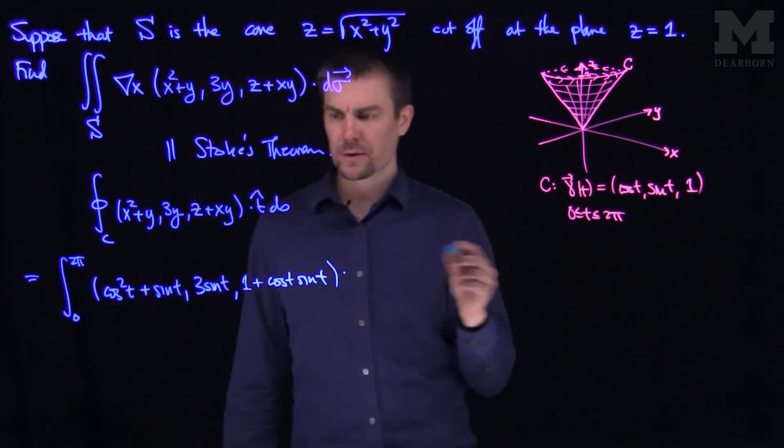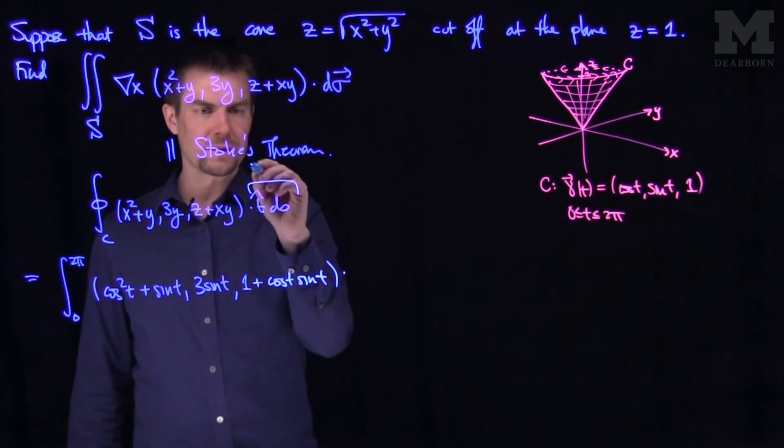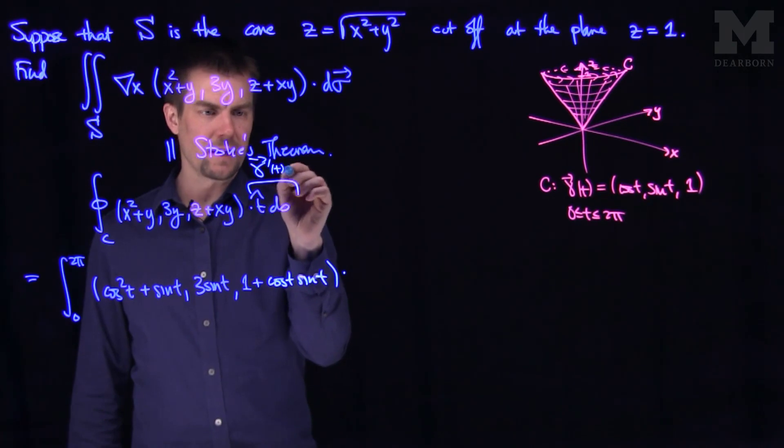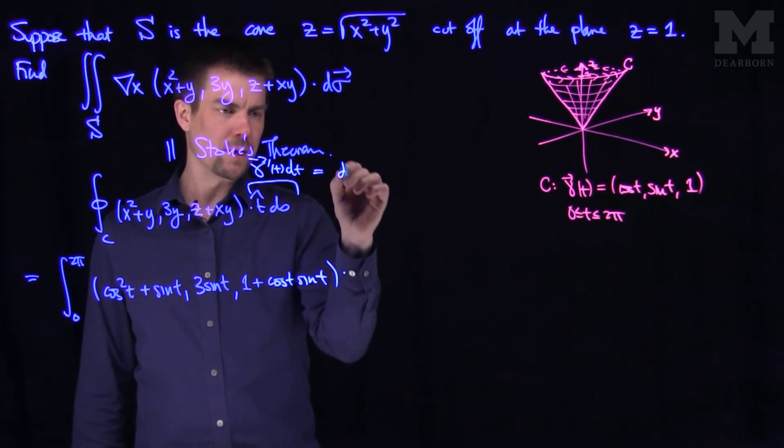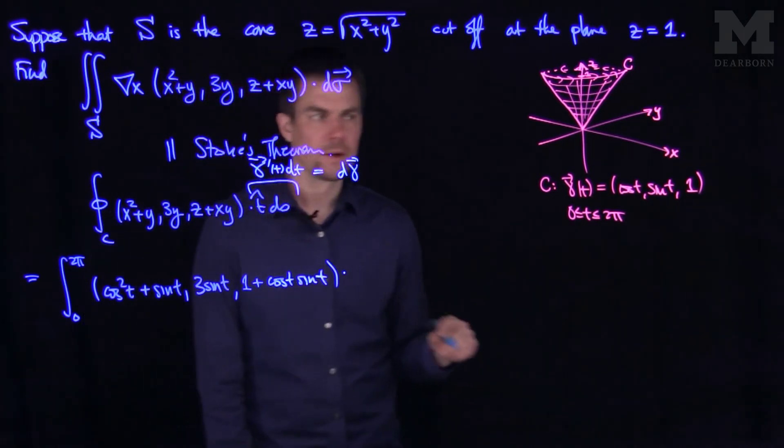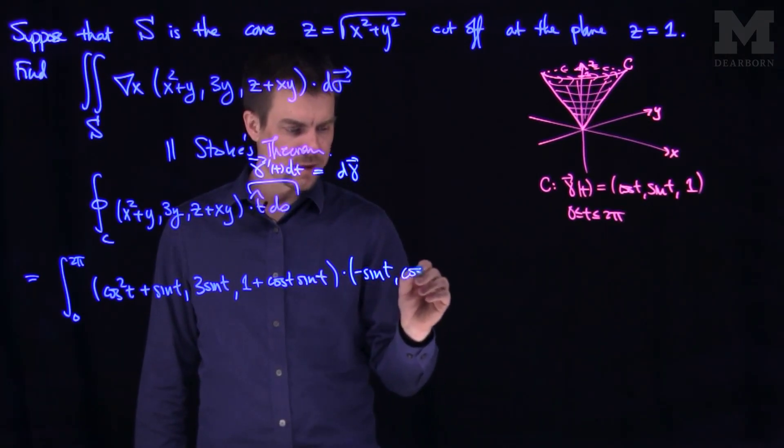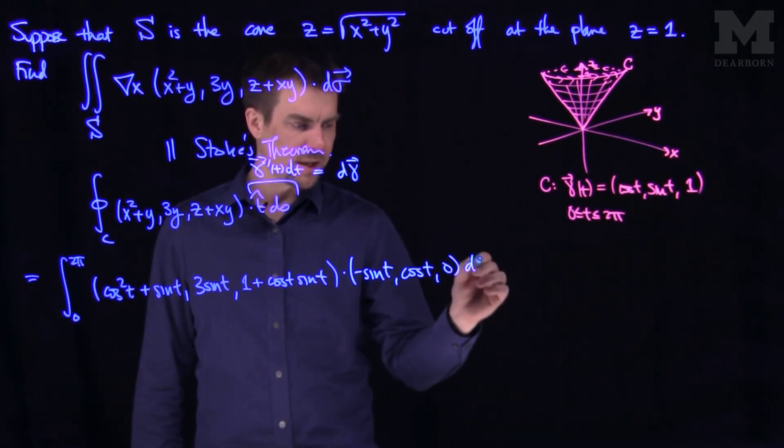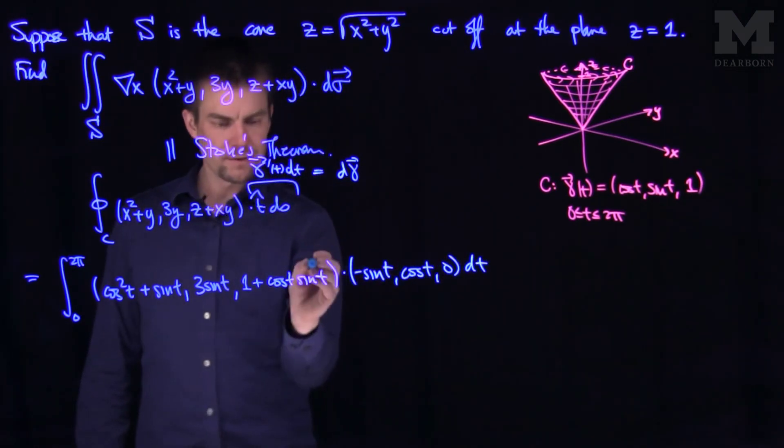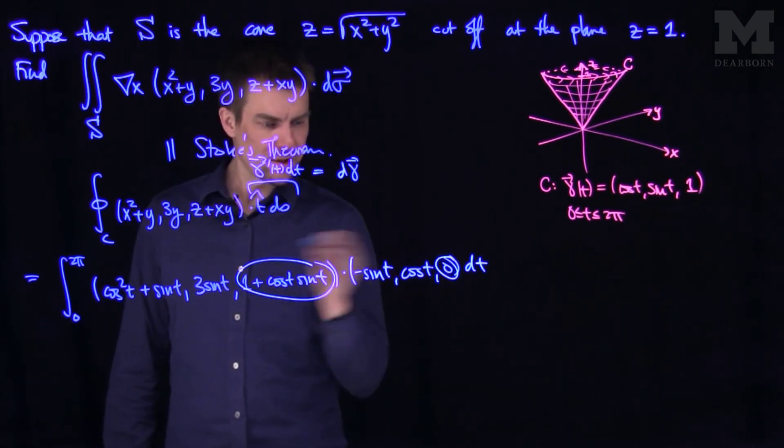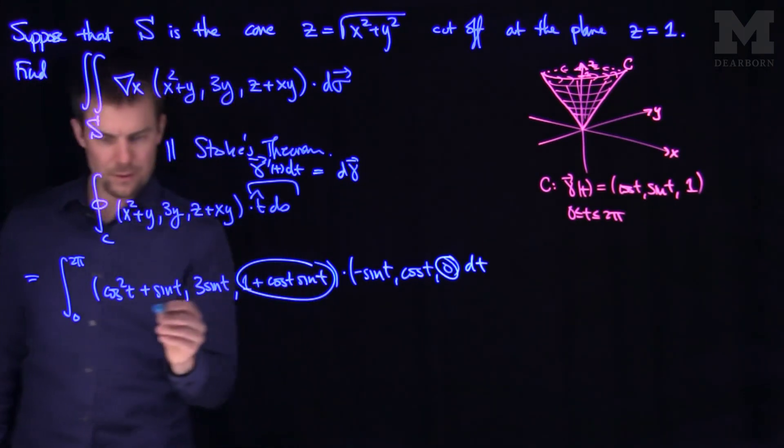And we're going to dot this. So T hat ds is the same thing as gamma prime of T dt, or in the notation of the book, d gamma vector. And so this will be negative sine of T comma cosine of T comma 0 dt. And so I'll do the dot product of 0 with this term over here. That dot product will give me 0. So all that's left is just these other terms.